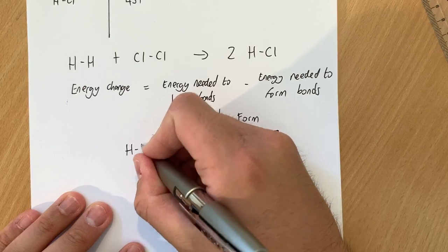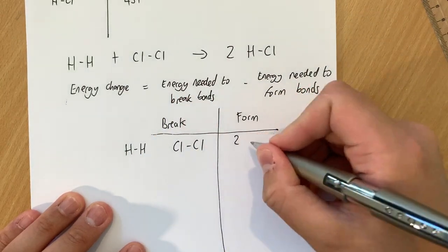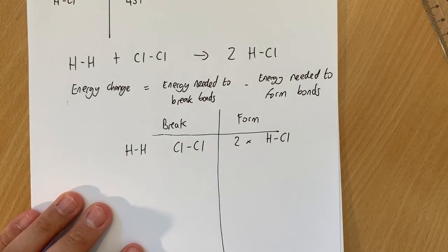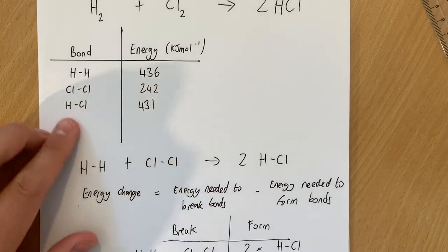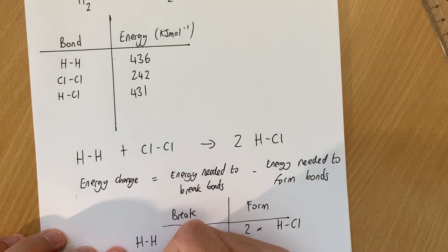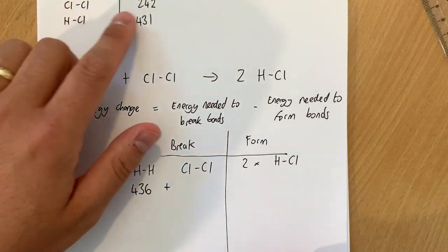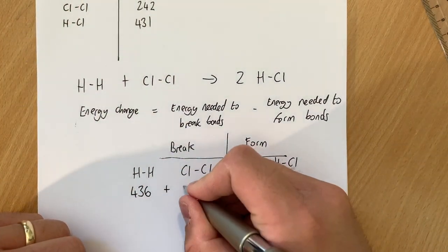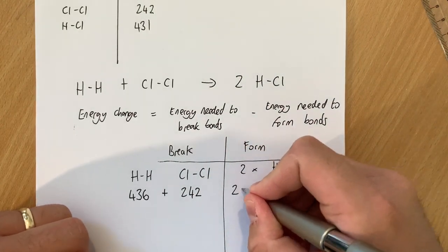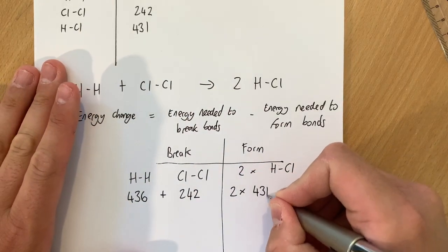So on this side what we've got is the energy needed to break H-H and the energy needed to break Cl-Cl. So we've got H-H and Cl-Cl, and on this side we've got two lots of H-Cl. So all we do is we go back to our table up here and we put the values in. So H-H, that is 436, plus the Cl-Cl. The Cl-Cl from the table is 242.